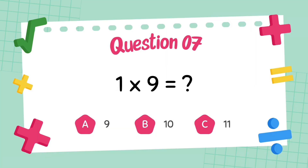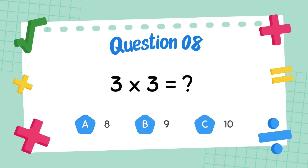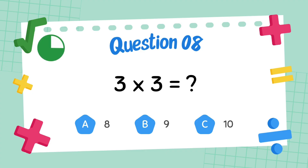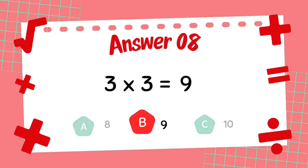What is 1 multiply 9? The answer is 9. What is 3 multiply 3? The answer is 9.